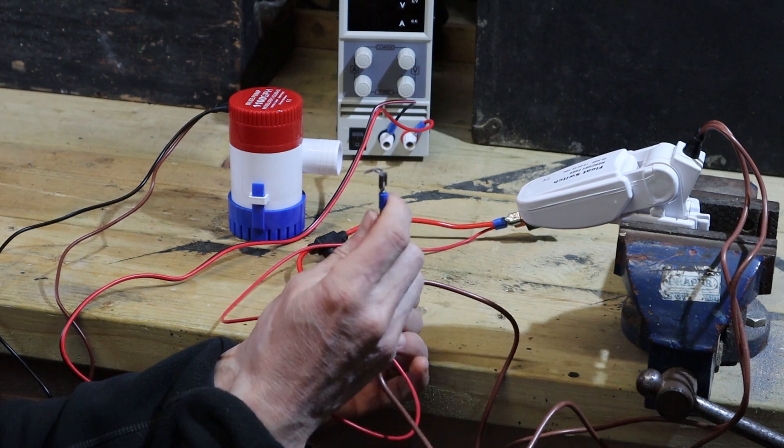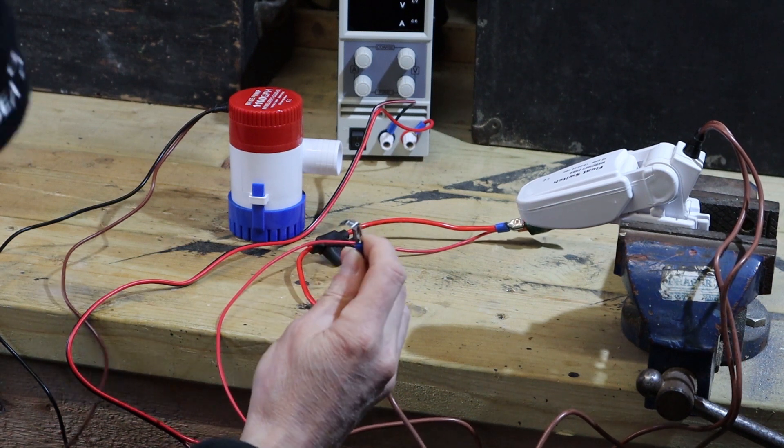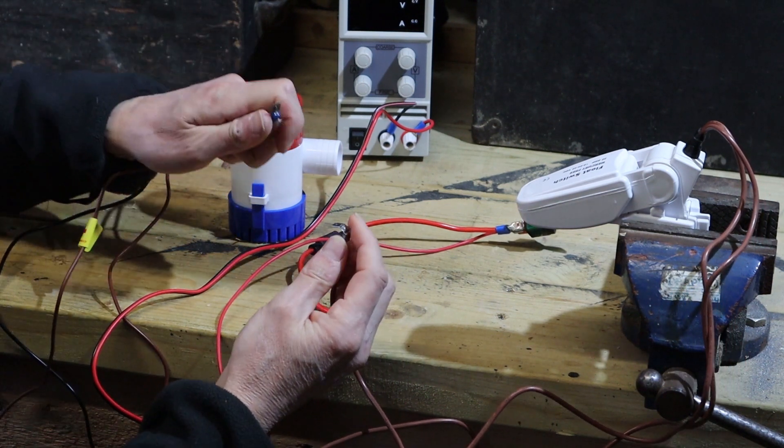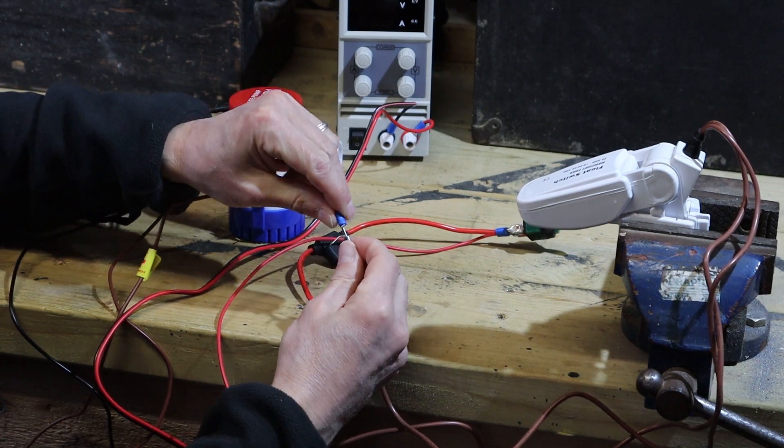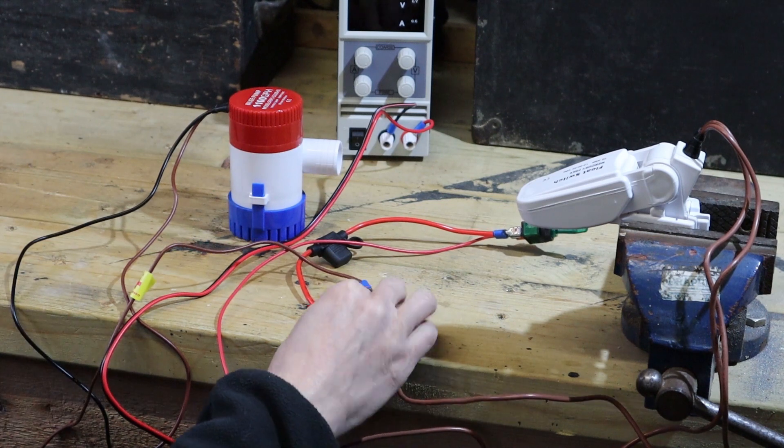From the other wire of the float switch we are going to connect to the positive wire from the bilge pump. So that's all the positive side connected.